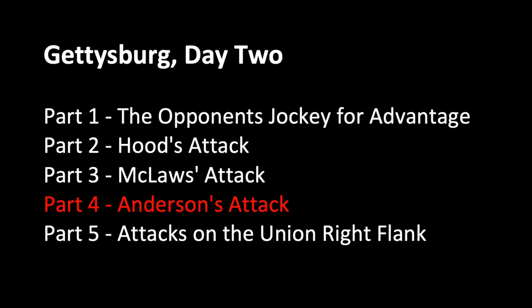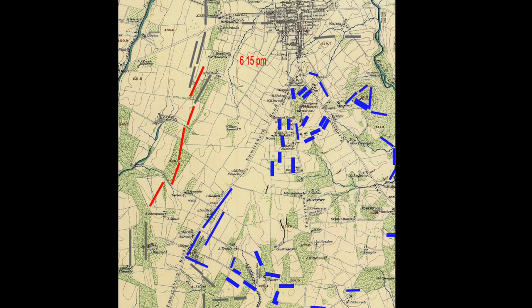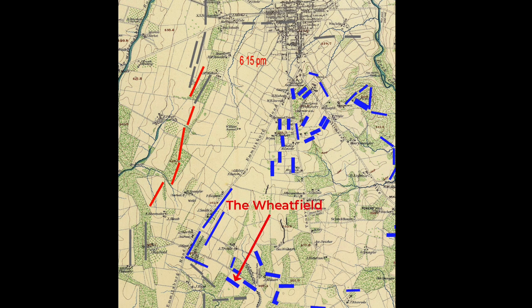Part 4: Anderson's Attack. Anderson's division attacked into the center of the Cemetery Ridge line, which is a spot formerly held by the Union 3rd Corps and Caldwell's division of the 2nd Corps. Caldwell's division and most of the 3rd Corps had been drawn into the fighting around the Wheatfield, and now there was a huge gap here.